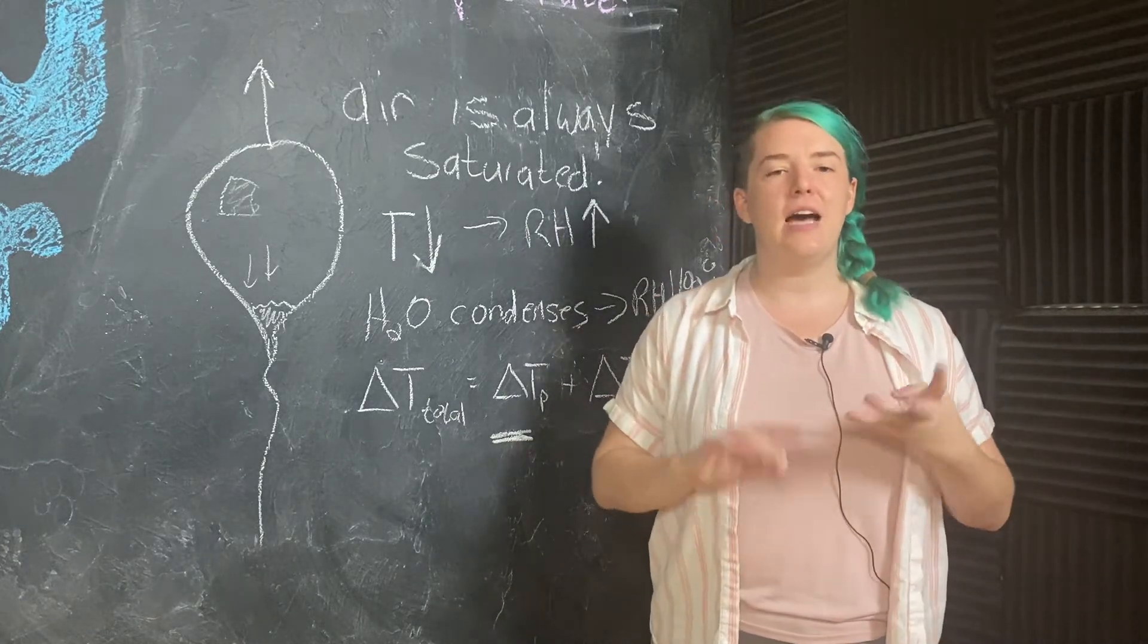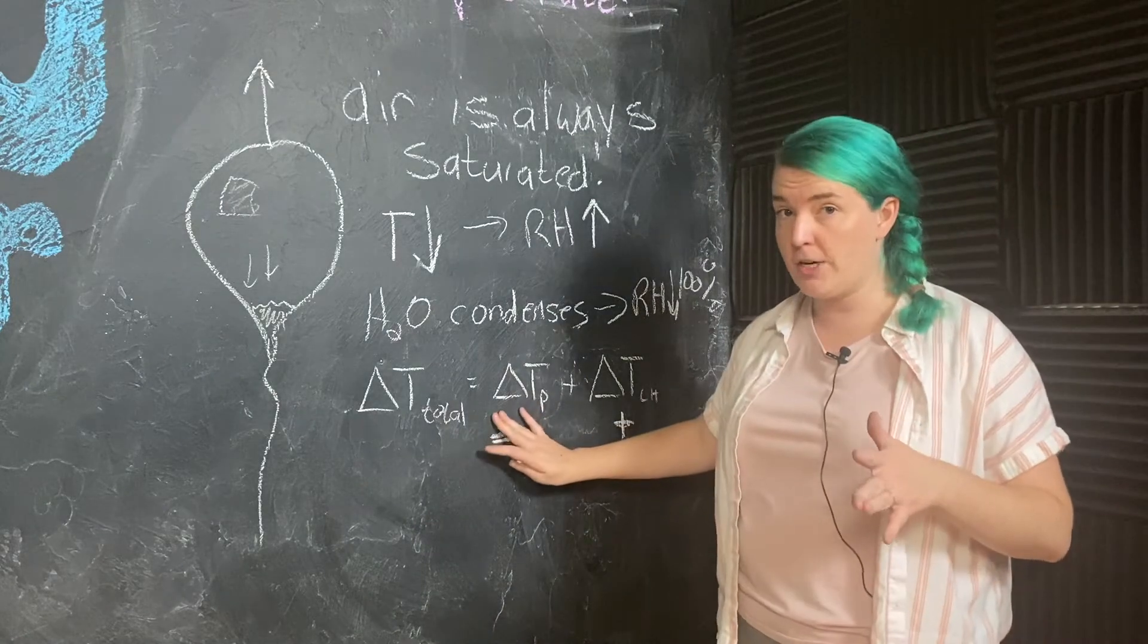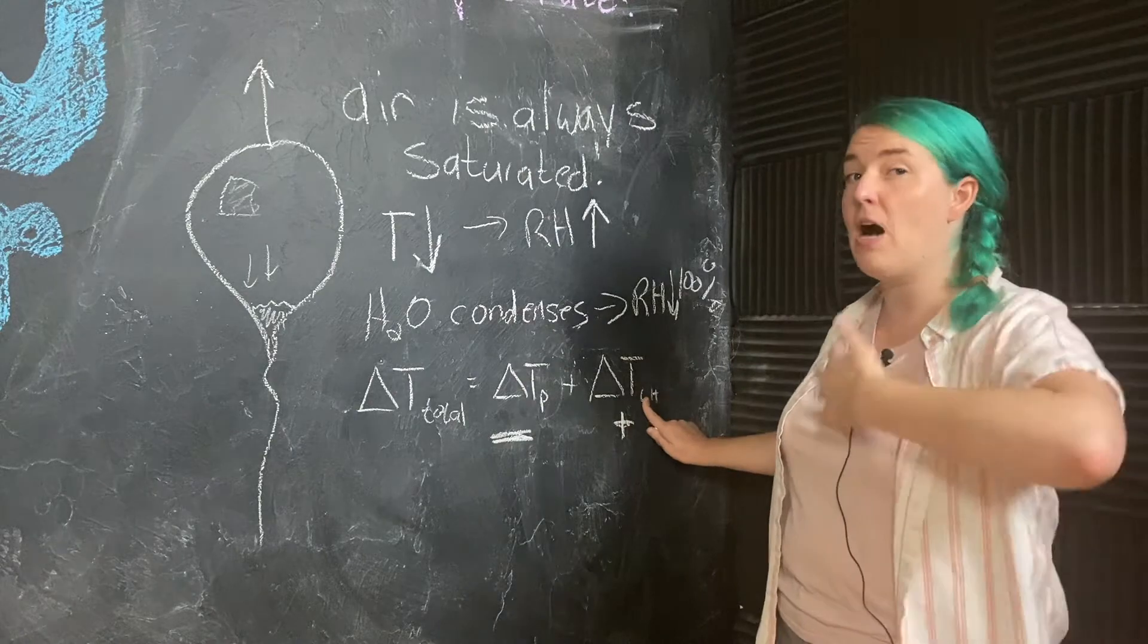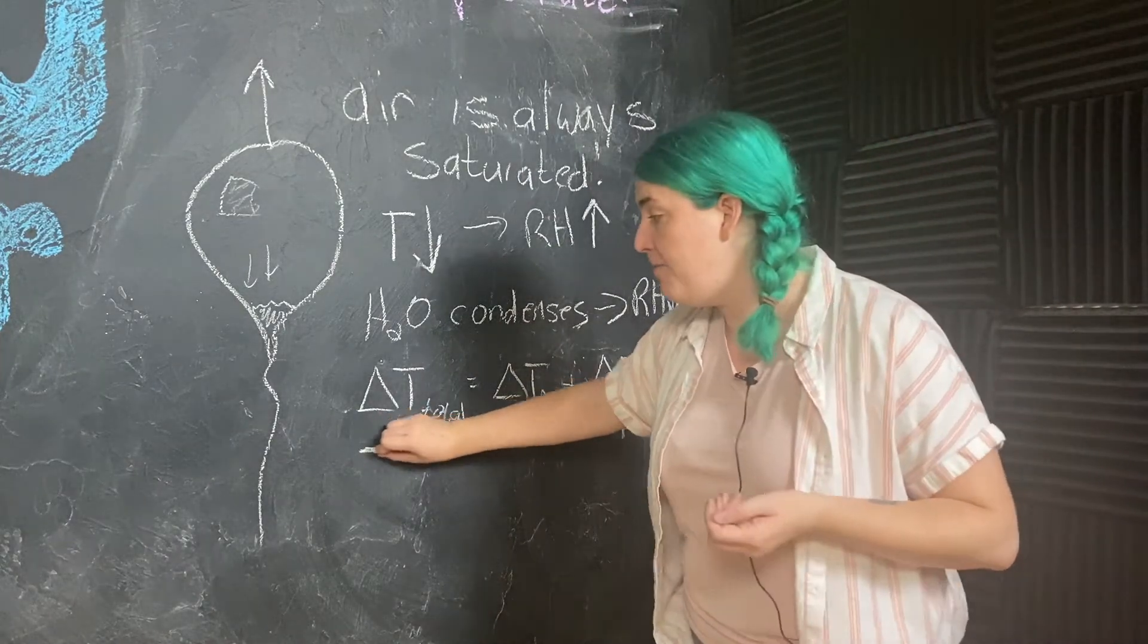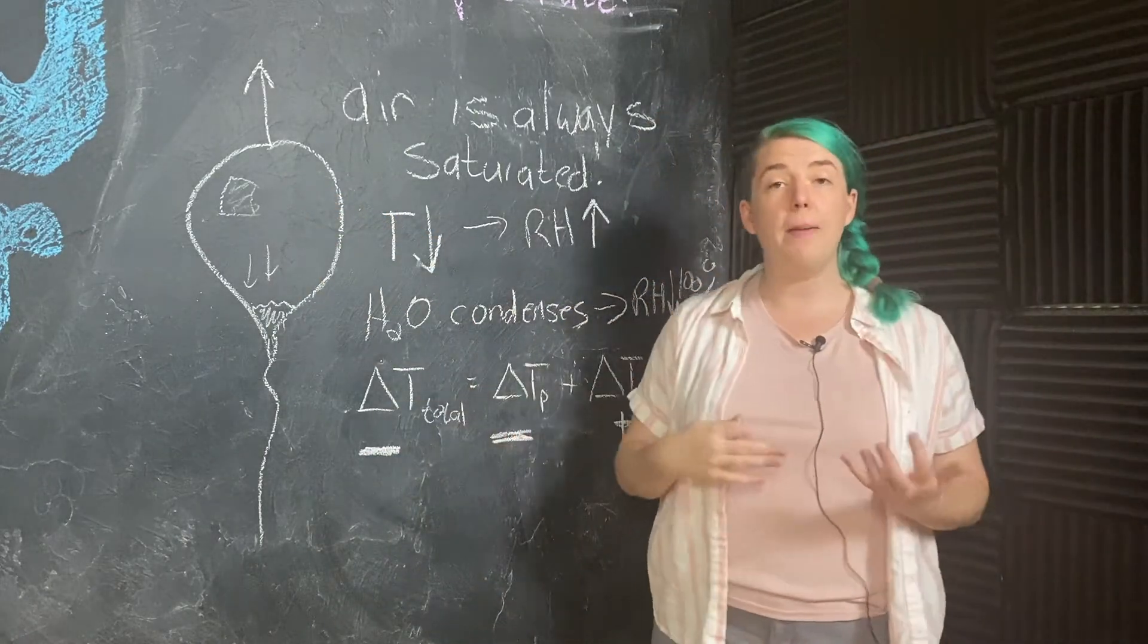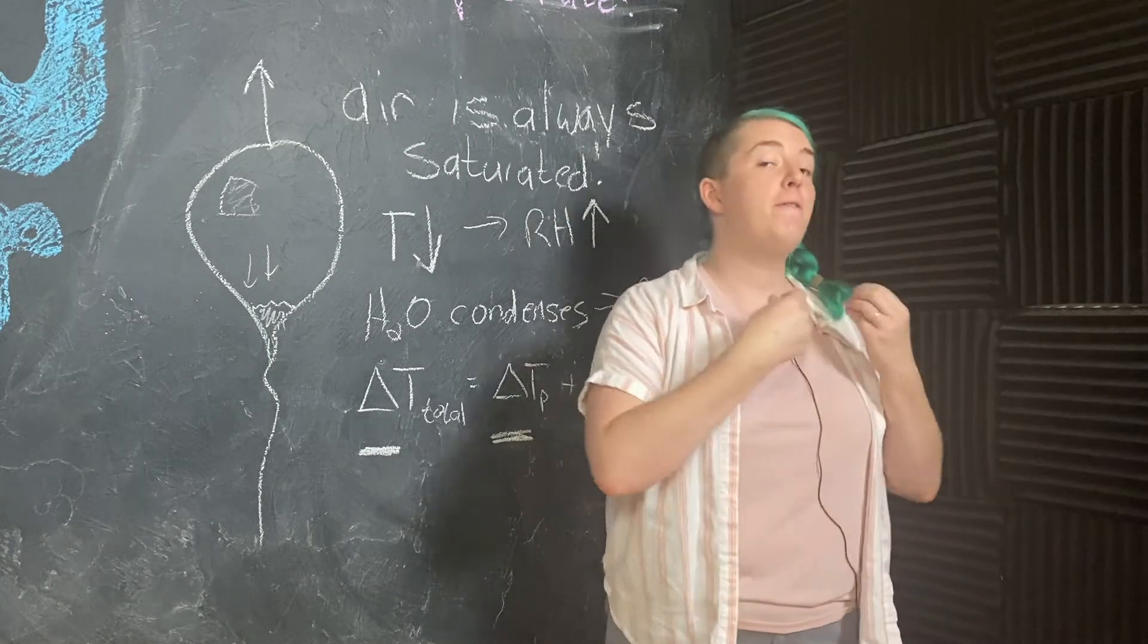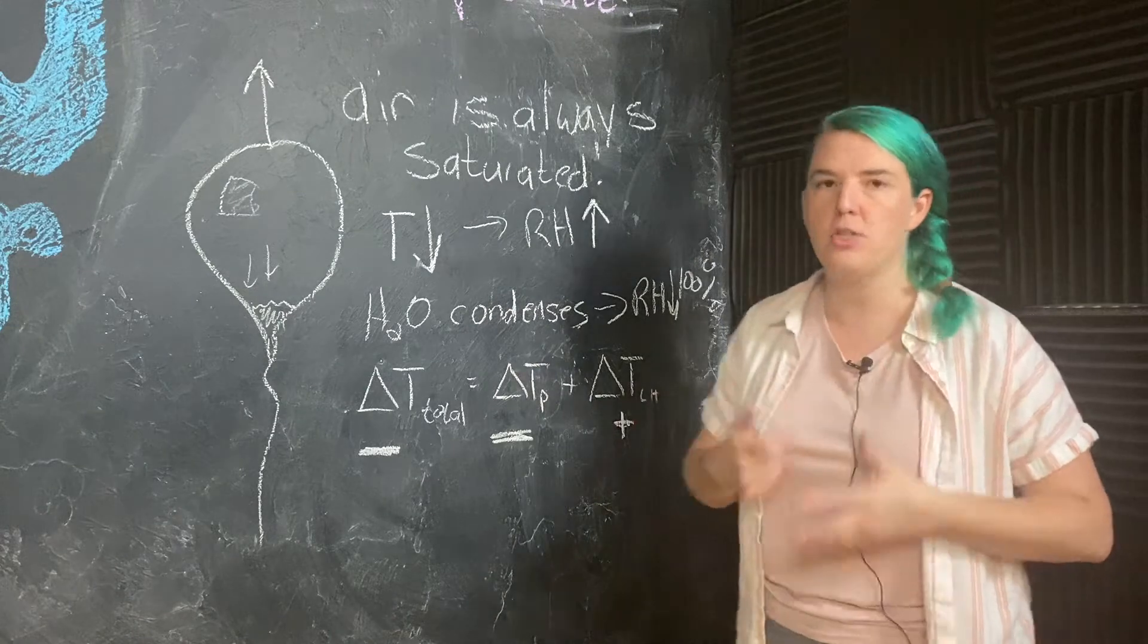And I'm going to tell you the final answer, that the change due to the drop in pressure is bigger than this change, the positive. So we still get a net negative change in temperature. The temperature of my balloon still drops as it rises, but it doesn't drop as fast as it would without this latent heat process going on.